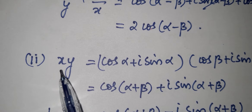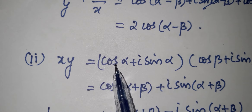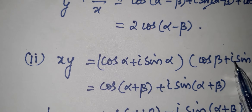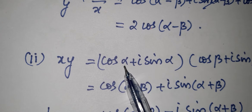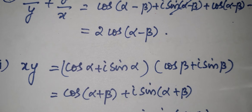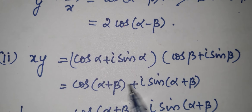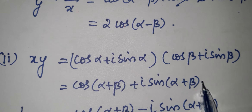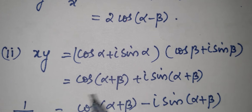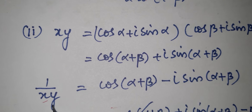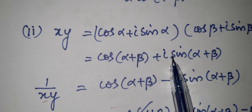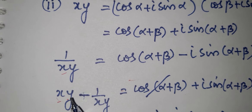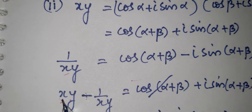Second subdivision sum: xy. This equals cos alpha plus i sin alpha multiplied by cos beta plus i sin beta. By multiplication of complex numbers in polar form: xy = cos(α+β) plus i·sin(α+β).